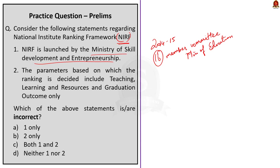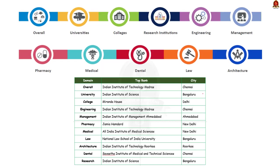Statement two says the parameters on which the ranking is decided include teaching, learning and resources, and graduation outcomes — this statement is also incorrect. The NIRF provides for ranking of institutions in five broad-based generic groups of parameters: teaching, learning and resources; research and professional practice; graduation outcome; outreach and inclusivity; and perception of the educational institution.